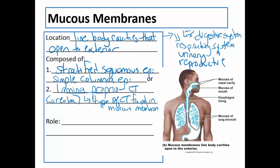Mucous membranes secrete mucus — spelled M-U-C-U-S — whereas 'mucous' in front of the word membranes is M-U-C-O-U-S, because it's an adjective versus mucus as a noun. Mucous membranes must be wet, and all of these organ systems release mucus to do that, except for the urinary system in which urine keeps the membranes wet. The role of mucous membranes is to secrete mucus, which decreases friction between the membrane and whatever might be moving along it — for example, food moving through the digestive system.